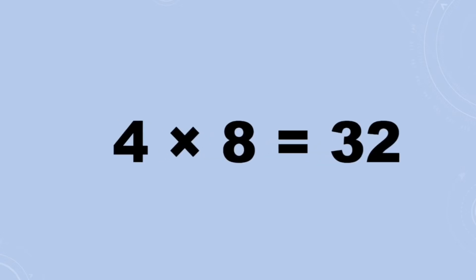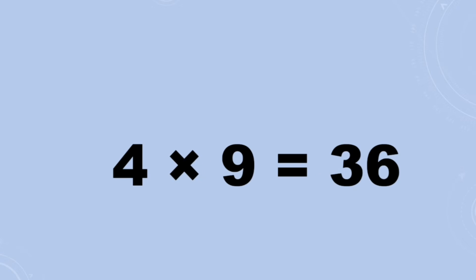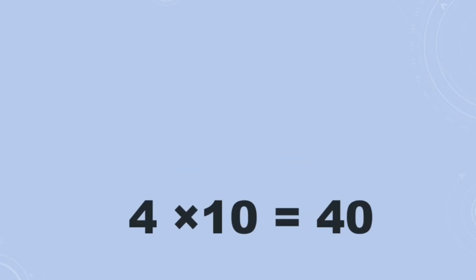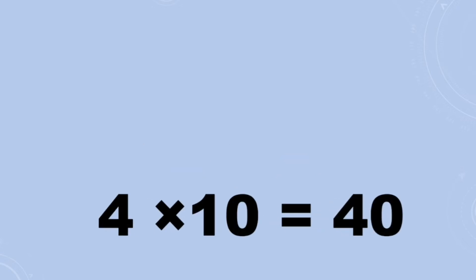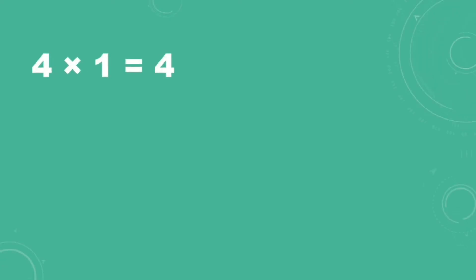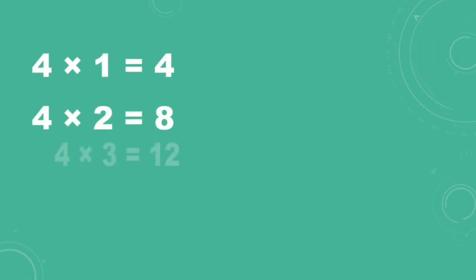Four eights are thirty-two, four nines are thirty-six, four tens are forty. Four ones are four, four twos are eight.